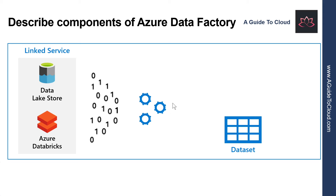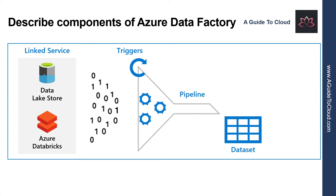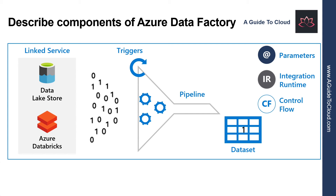Now let's understand what a pipeline is. A pipeline is a logical grouping of activities that together perform a task. The activities in a pipeline define actions to perform on your data. For example, you might use a copy activity to transform data from a source dataset to a destination dataset. You could include activities that transform the data as it is, or you might combine data from multiple sources together. Other activities enable you to incorporate processing elements from other services. For example, you might use an Azure Function activity to run an Azure Function to modify and filter data, or an Azure Databricks Notebook activity to run a notebook that performs more advanced processing.